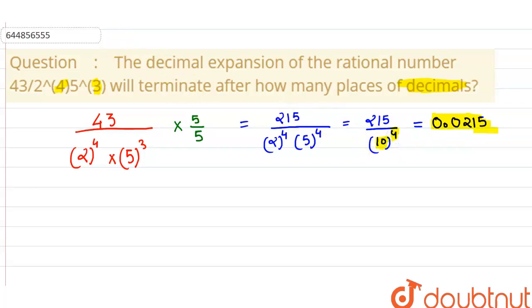So there are going to be 4 digits. After how many places of decimal does the answer terminate? After 4 places of decimal - the fourth place is our answer. Thank you very much.